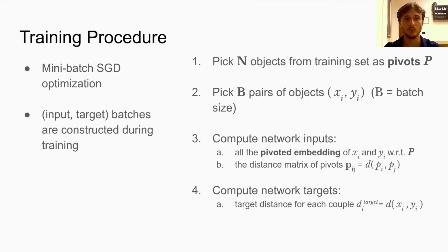To train our model, we use mini-batch SGD. So the training batches are constructed online during training as follows. First, we randomly pick N objects from the training set of metric objects as the set of pivots. And also from the training set, we randomly pick B pairs of objects, where B is the batch size.